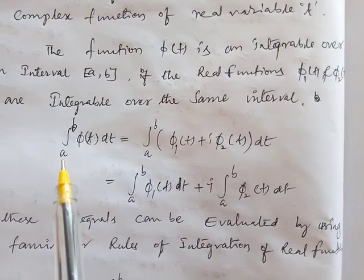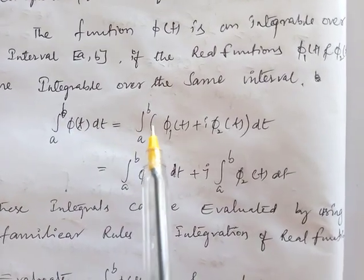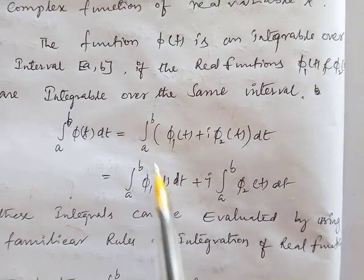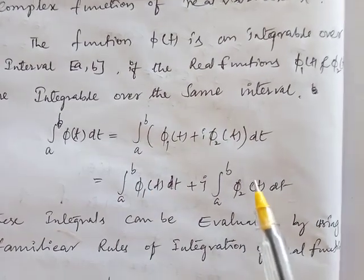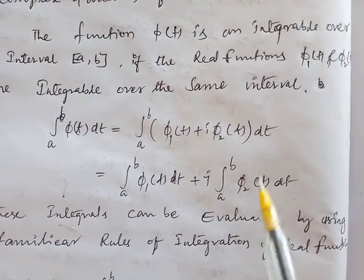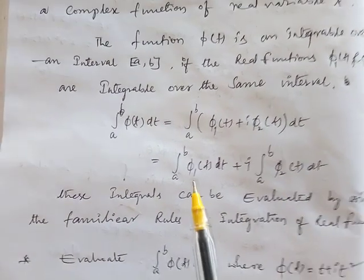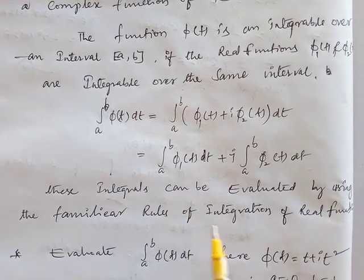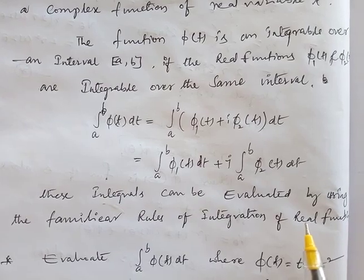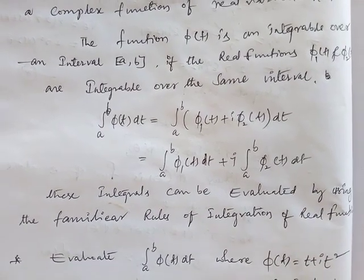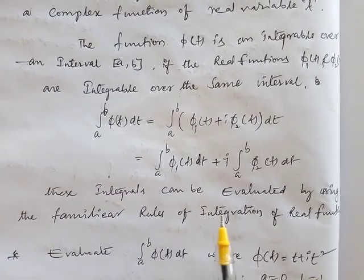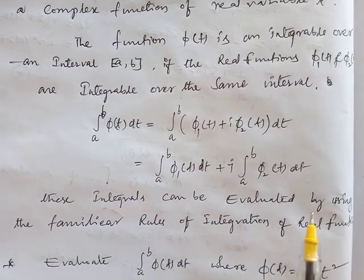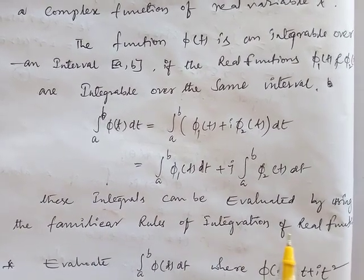Mathematically, the integral from a to b of φ(t) dt equals the real part integrated from a to b, plus i times the imaginary part integrated from a to b. You can integrate directly — no problem. These integrals can be evaluated by using the familiar rules of integration of real functions, which we already discussed in previous classes.